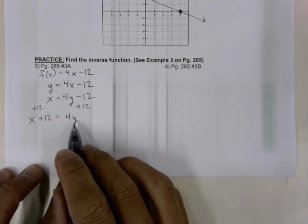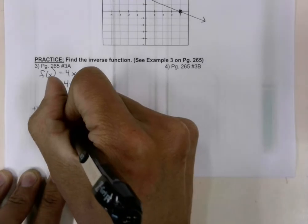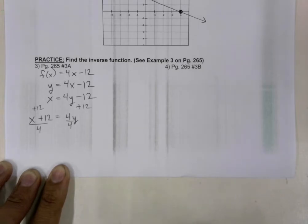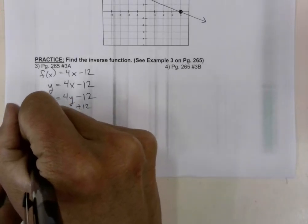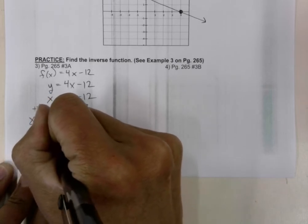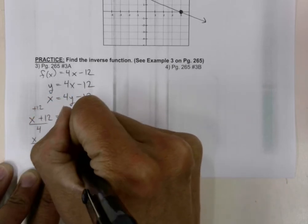Now, we can solve for y by dividing both sides of the equal sign by 4. And what we're left with is x over 4 plus 12 over 4 is equal to y.